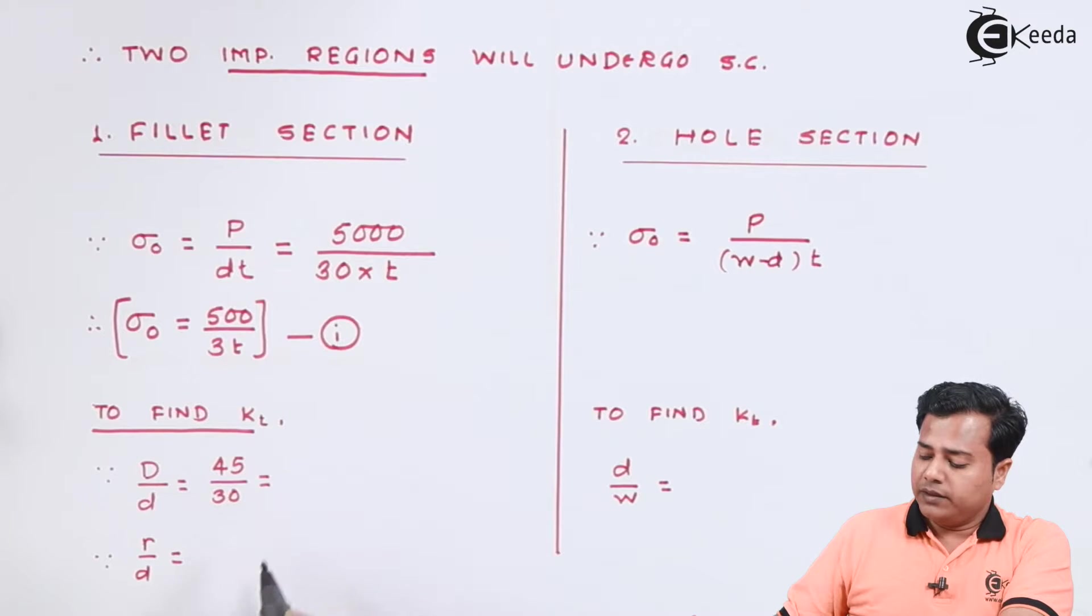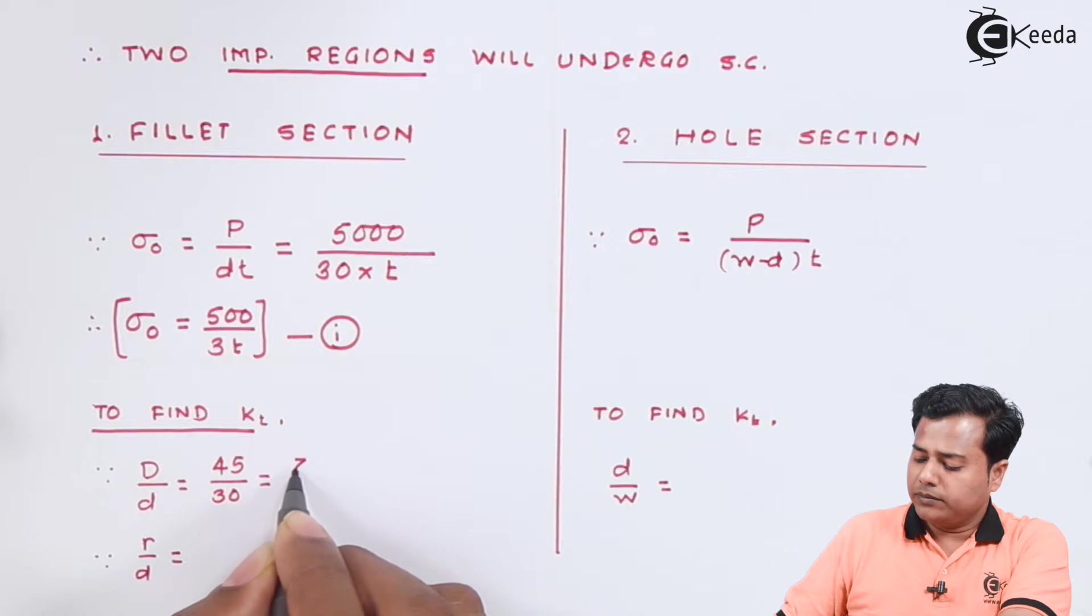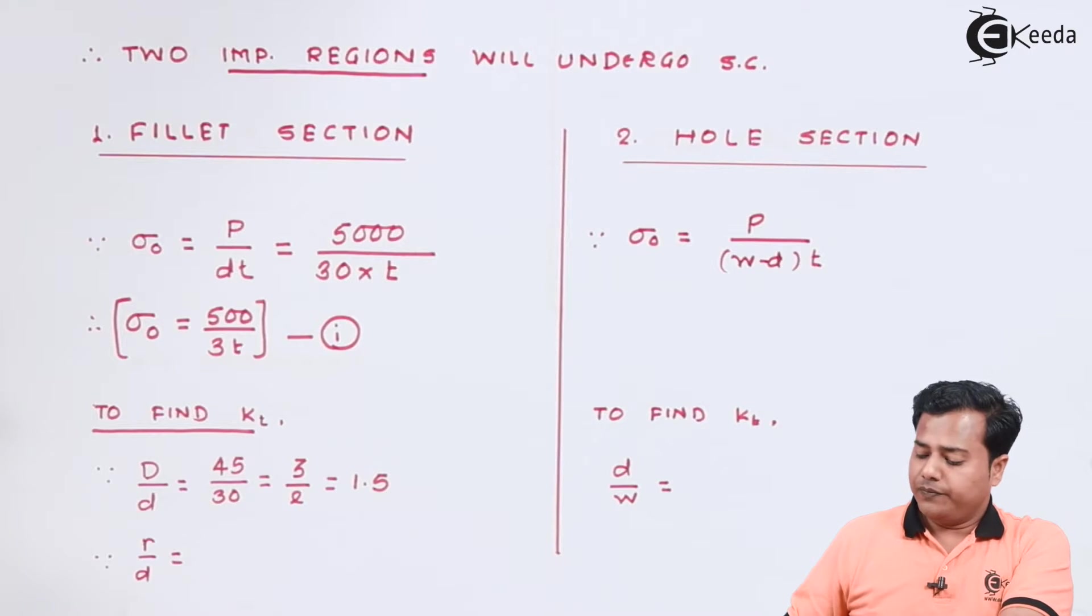The ratio of fillet radius which makes it 1.5. Similarly the ratio of fillet radius to the small dimension d which is r by d in our case comes out to be 5 by 30 which is somewhere around 0.167.